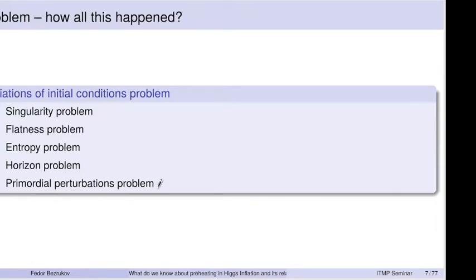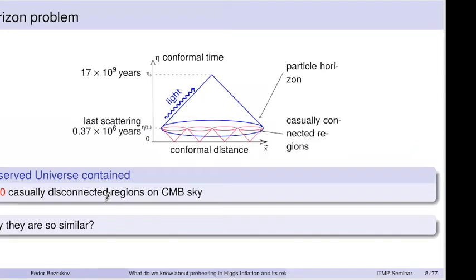I'll focus on the horizon problem. An even more important problem, in my understanding, is how perturbations on top of the uniform universe appeared. We know the universe is not exactly flat and there are some minor irregularities; otherwise we wouldn't be here speaking. Inflation, after it was invented, actually solved this problem in a really nice way. The horizon problem: one can ask what part of the universe a signal can propagate to.